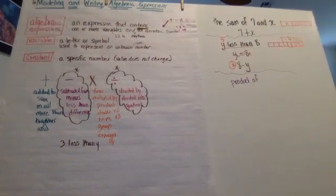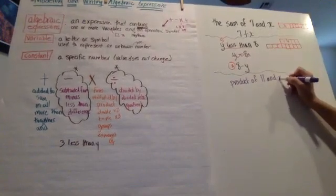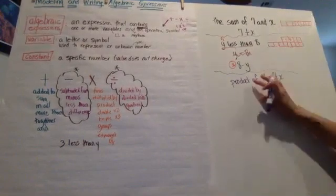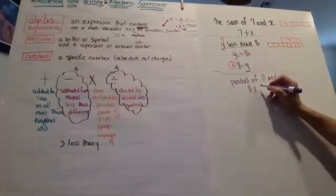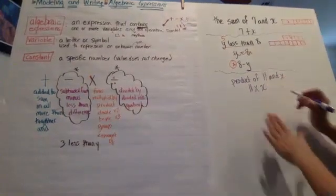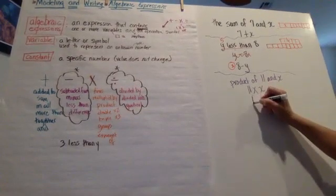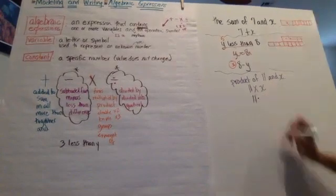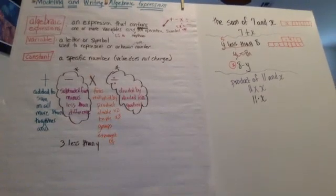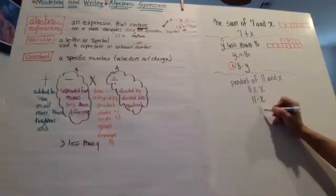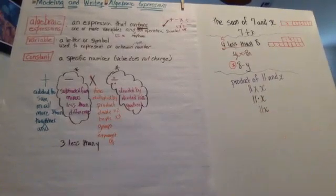What if we tried the product of 11 and X? I know that word product means I'm going to be multiplying—11 times X. I really want to rewrite that because that X looks like too many Xs. I think I might use the dot for multiplication. That's really going to drive it home that it's 11 times X. Another way I could write this is 11X.